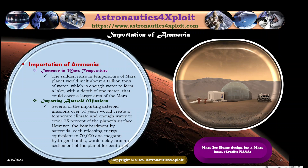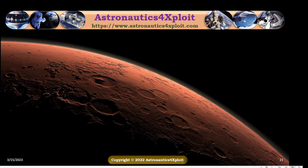The sudden rise in temperature of the Mars planet will melt about a trillion tons of water, which is enough water to form a lake with a depth of one meter that could cover a large area of Mars. Several impacting asteroid missions over 50 years will create a temporary climate and enough water to cover 25% of the planet's surface. However, the bombardment by asteroids, each releasing energy equivalent to 70,000 one-megaton hydrogen bombs, will delay human settlement of the planet for centuries.